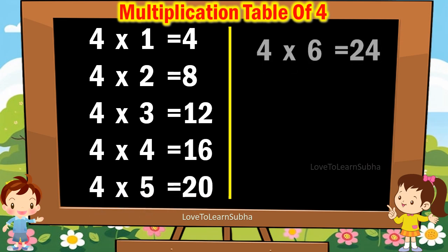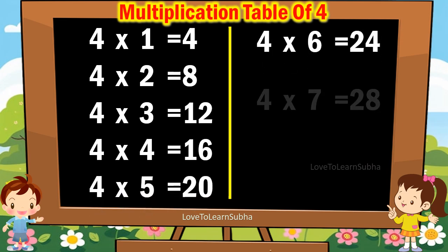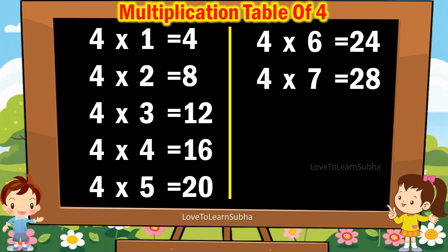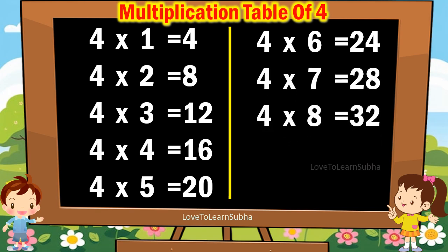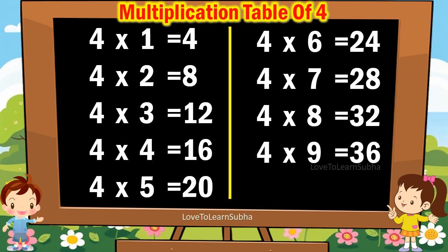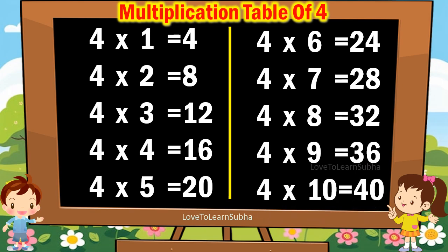4 6s are 24, 4 7s are 28, 4 8s are 32, 4 9s are 36, 4 10s are 40.